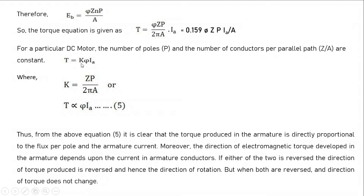For a particular DC motor, the number of poles P, number of conductors Z, number of parallel paths A, and 2π are all constant. So we can write T = K·φ·Ia, where K = ZP / 2πA. The only variables are flux φ and armature current Ia. Therefore, torque is directly proportional to φ·Ia.